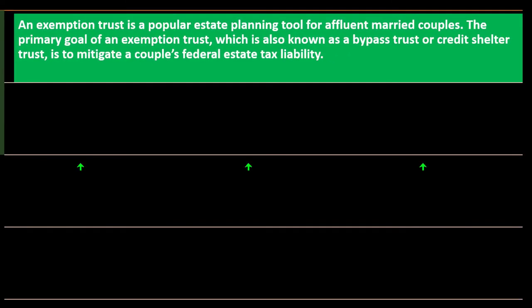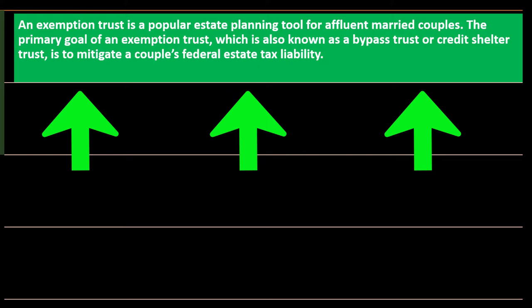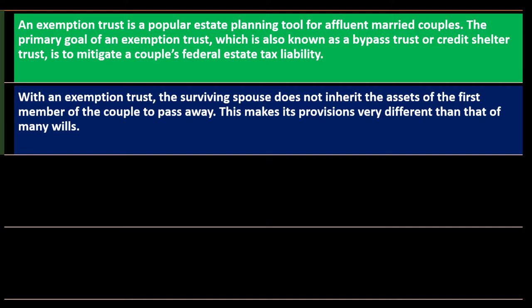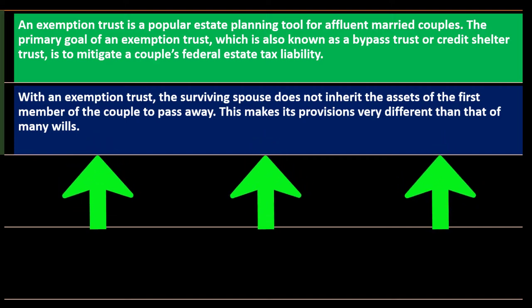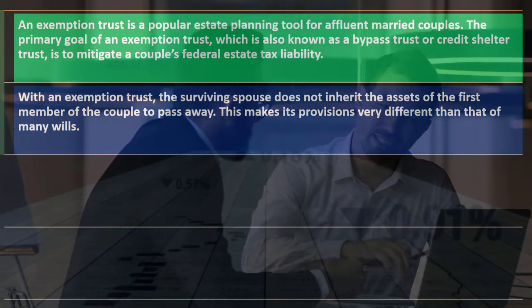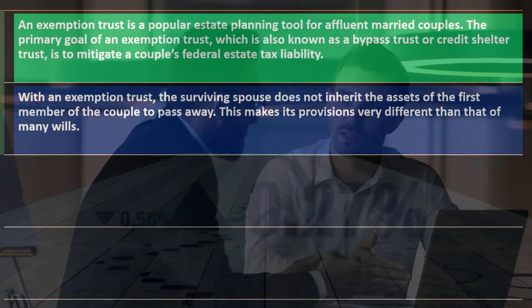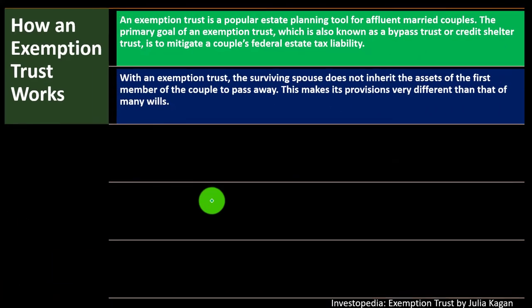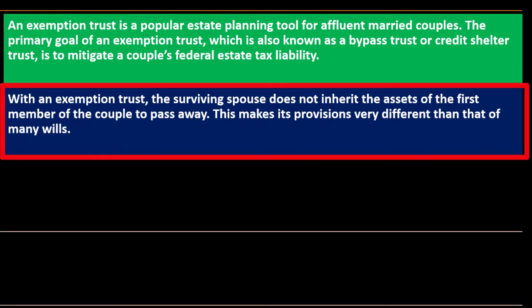How an exemption trust works: an exemption trust is a popular estate planning tool for affluent married couples — mainly more wealthy people. The primary goal of an exemption trust — also known as a bypass trust or credit shelter trust — is to mitigate a couple's federal estate tax liability. With an exemption trust, the surviving spouse does not inherit the assets of the first member of the couple to pass away. The surviving spouse is 'bypassed' and the deceased's assets are held in a trust.